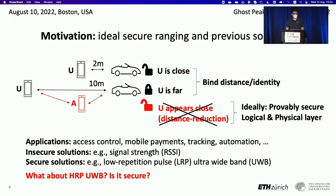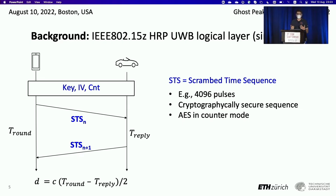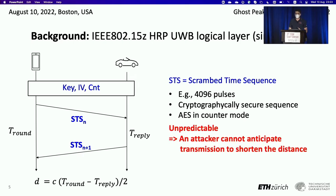So what about HRP — is it secure? At the logical layer, the two devices share some cryptographic material and use this to generate a new field — the STS, scrambled time sequence — at every new ranging operation. This field is unpredictable in a cryptographically secure way, so the attacker cannot start transmitting in advance in order to shorten the distance. At the logical layer, HRP is secure.